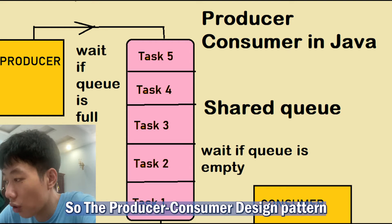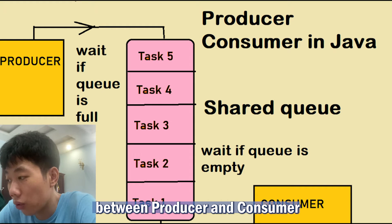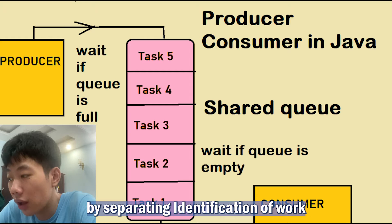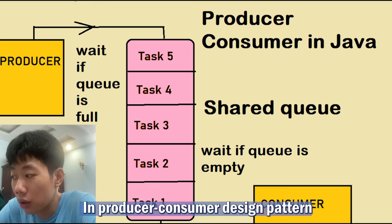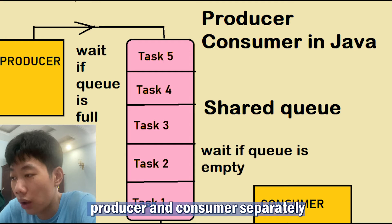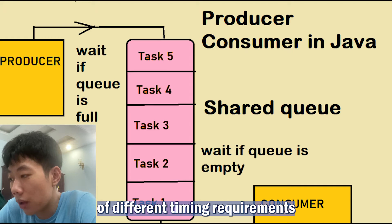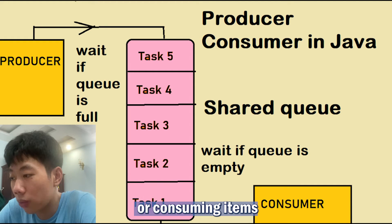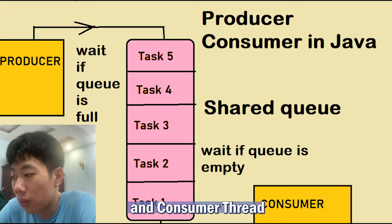The producer-consumer design pattern is a classic concurrency pattern which produces coupling between a producer and consumer by separating identification of work from execution of work. In the producer-consumer design pattern, a queue is used to control the flow, and this separation allows you to code producer and consumer separately.